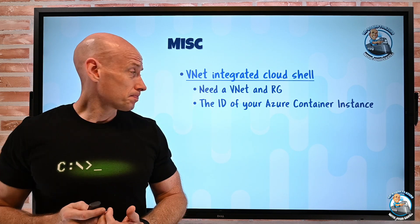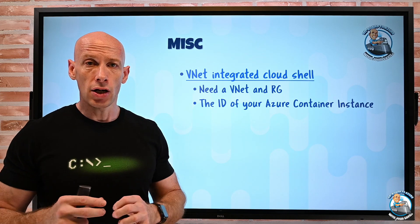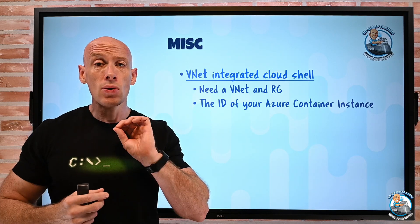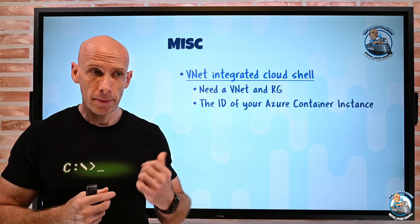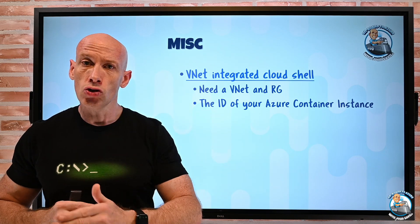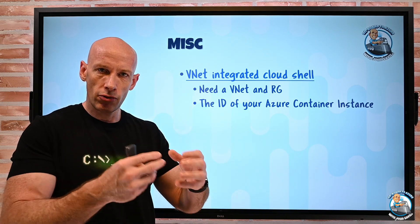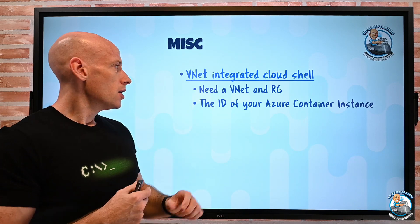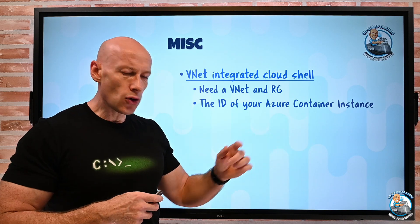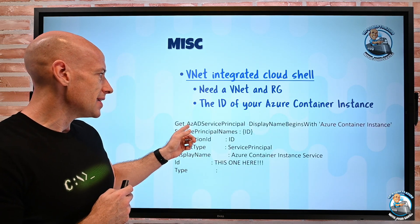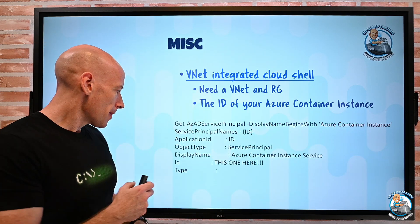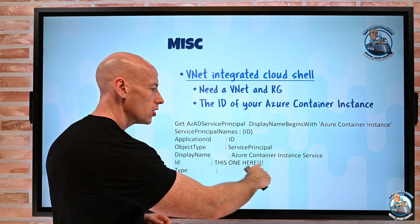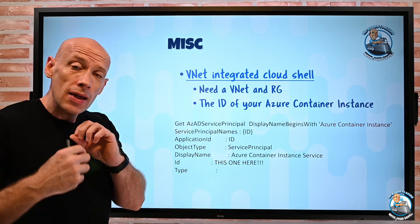It's actually super easy to deploy. All I need is a virtual network and a resource group. The resource group must be created in the same region as the VNet for the metadata to work. It's only available in West US and West Central US right now, and it's in preview. I also need the ID of the Azure Container Instance service principal — I can get this by running Get-AzADServicePrincipal and searching for Azure Container Instance. I want the one with the ID field, not the application ID — it'll be a GUID. That's the value I'll use in the templates.